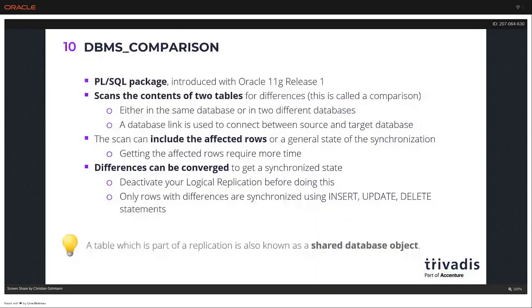DBMS_COMPARISON is a PL/SQL package introduced with 11g Release 1. The main idea is that this package scans the contents of two tables for deviations — this operation is called a comparison. These two tables can be in the same database, or you can use two different databases connected via a database link. You have two ways to perform the scan: you can include the affected row IDs showing which rows have data deviations, or you can create a comparison that only says whether data is in sync or not. The latter is much faster, but you don't know which data is affected.